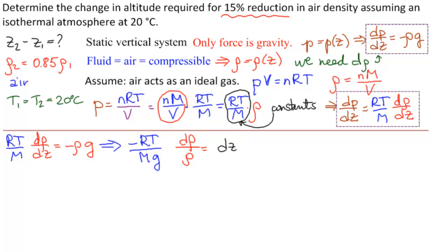So we now have d rho divided by rho equals dz. Notice I've left space for the integrals, so this is from rho 1 to rho 2 and this is from Z1 to Z2. That's an ordinary differential equation. We have d rho over rho, so that's ln of rho, so that's ln of rho 2 over rho 1, equals Z2 minus Z1, which is what we want.